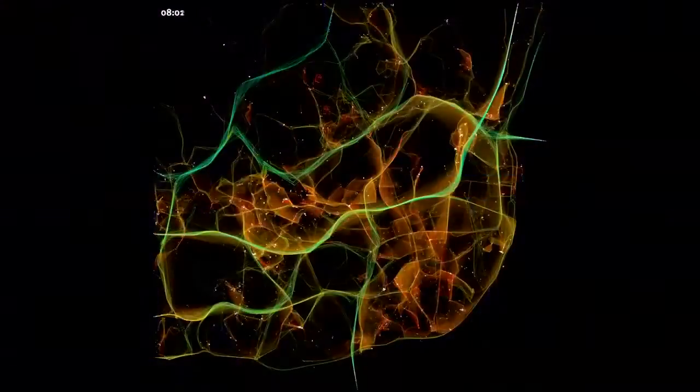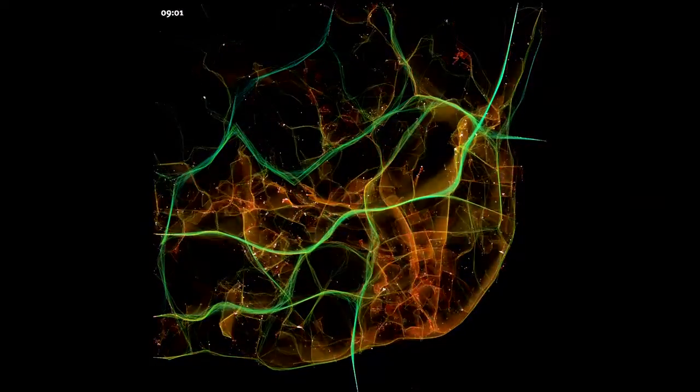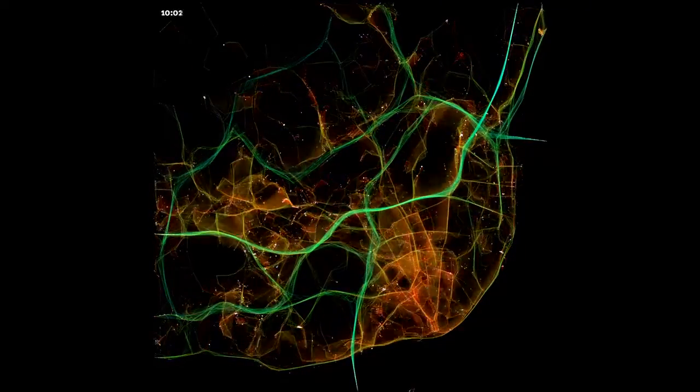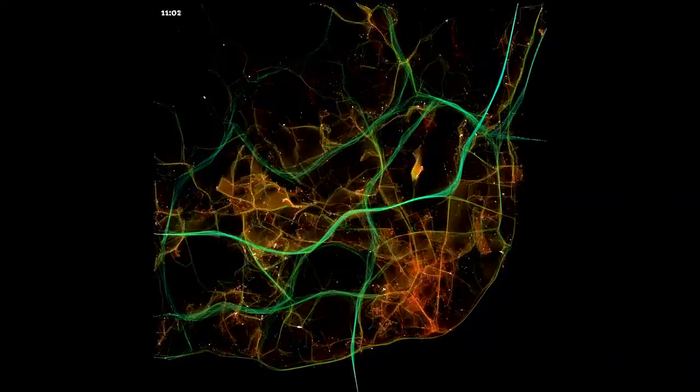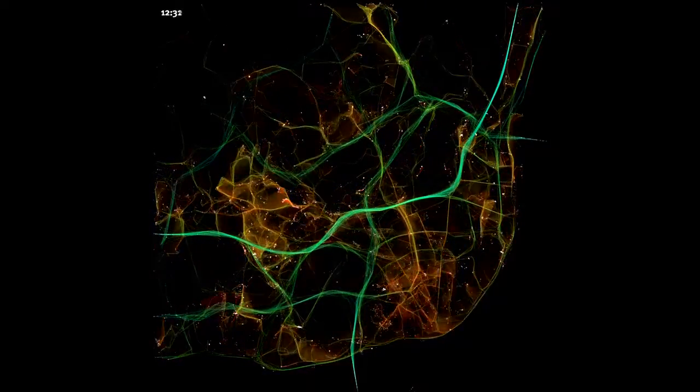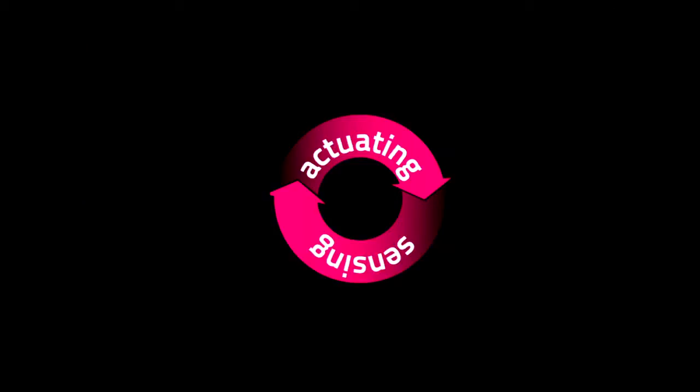This was just one example of sensing how today we can sense a lot of things. There's many other ways. What you see here, for instance, is the city of Lisbon sensed through billions and billions of data coming from the taxi fleet GPS information. You can do the same with cell phone information. So today we can sense our space, our cities in a much different way. Now, the important thing, however, is actuating. How can we use all this information in order to promote action, enact action into the city?